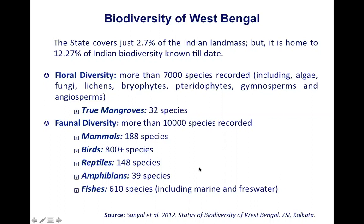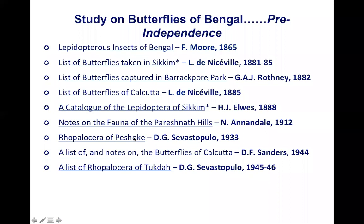Since Kolkata was the first capital of British-ruled India, the history of natural history documentation is very rich and old — almost 150 years old. The butterfly documentation history can be divided into two sections: pre-independence and post-independence.